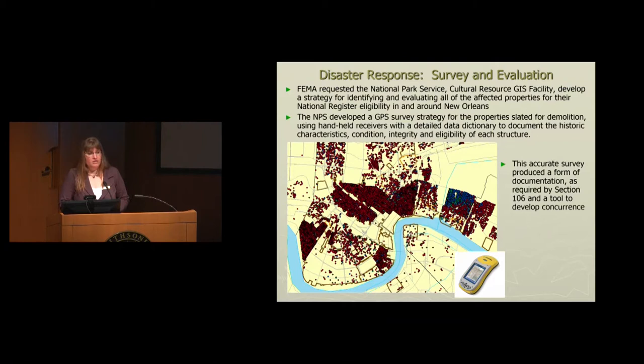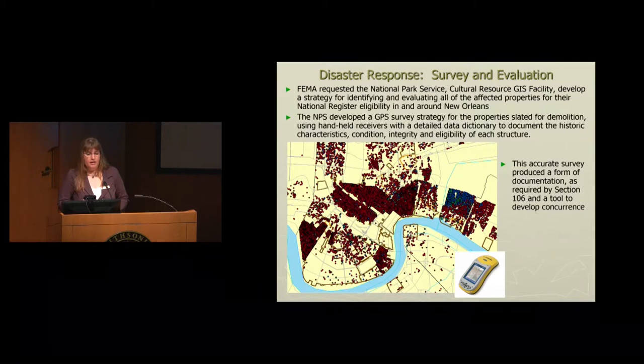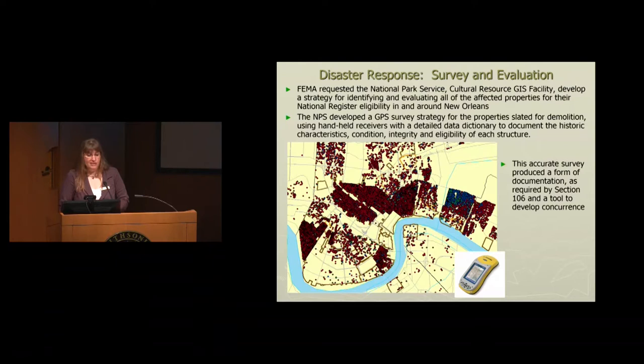FEMA asked for our help to develop a strategy to quickly identify and evaluate all of these affected properties to see if they were National Register eligible. The Park Service developed a GPS survey strategy to look at what had been slated for demolition. We used handheld GPS receivers to go out in the field and collect a location for each one of those properties. We used a detailed data dictionary — a form within that handheld GPS receiver — to look at the characteristics of these properties: are they historic, are they not historic, their condition, their historic integrity, their eligibility.